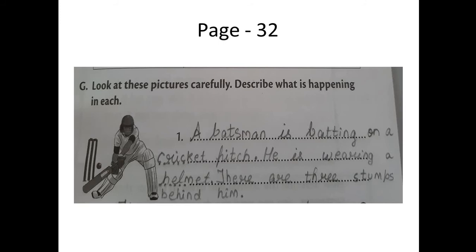Now, students, it's again the same page 32 from the book writing. We have to see this picture very carefully. Whatever sentences come in your mind, you have to write that. As we did in our live class — first, whatever picture is there, write down the words you see, and then using those words, make very small sentences. Question G: Look at these pictures carefully. Describe what is happening in each. Look at the first picture carefully, write down some words, and then frame small sentences. I have written: 'A batsman is batting on a cricket pitch. He is wearing a helmet. There are three stumps behind him.' No need to write more than three sentences. Students, you can write by your own.